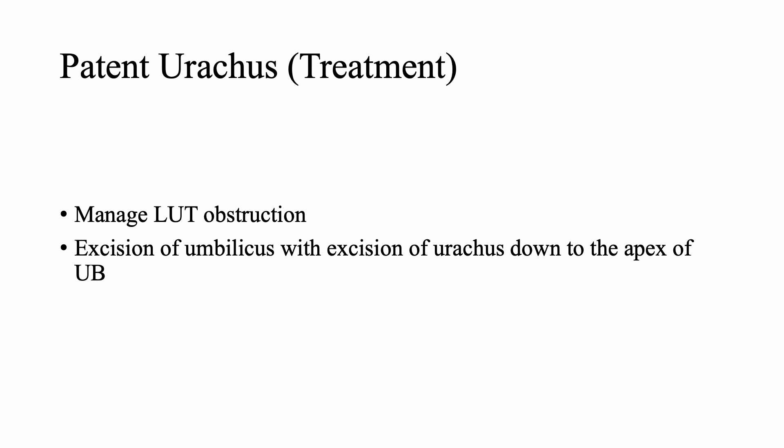Regarding treatment of patent urachus: the main reason for a patent urachus being found is lower urinary tract obstruction. If we manage the lower urinary tract obstruction, the condition may resolve. If it cannot be managed, we proceed with excision of the umbilicus along with excision of the urachus down to the apex of the urinary bladder, and closure of the urinary bladder at the apex.